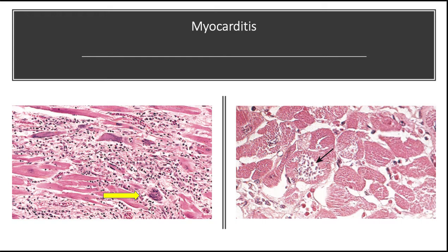Chagas myocarditis is characterized by the parasitization of scattered myofibers by trypanosomes, as shown in the right picture, accompanied by an inflammatory infiltrate of neutrophils, lymphocytes, macrophages, and occasional eosinophils.